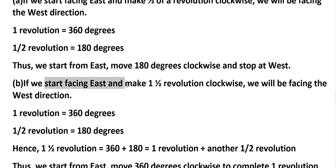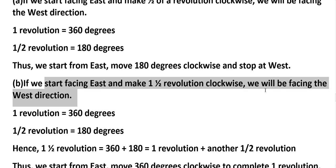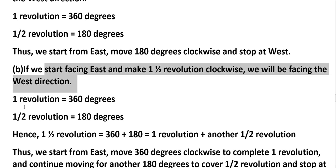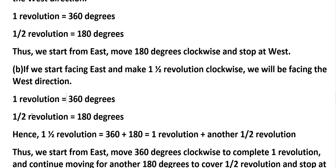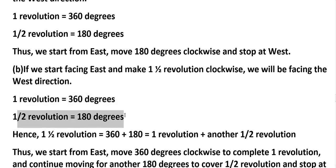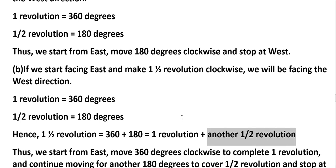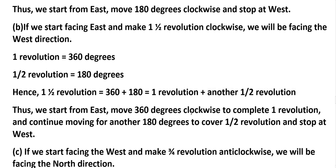B: if we start facing east and make one and a half revolutions clockwise, we will face west. One revolution equals 360 degrees, half revolution is 180 degrees. So one and a half revolution means 360 + 180 degrees — that is one full revolution plus another half revolution. Thus, starting from east, moving clockwise 360 degrees to complete one revolution, then continuing another 180 degrees, we stop at west.